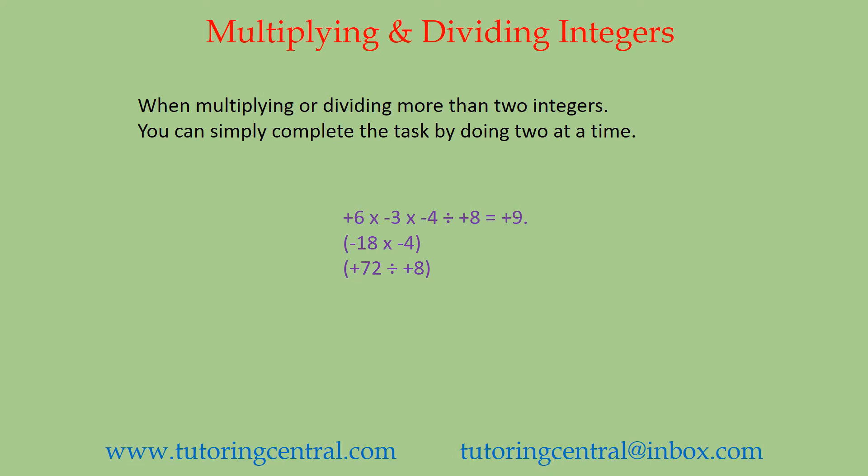When multiplying or dividing more than two integers, you can simply complete the task by doing two at a time going left to right. For example, positive 6 times negative 3 times negative 4 divided by positive 8 equals positive 9. How did we do that? We just went two by two: positive 6 times negative 3 gives us negative 18. Then negative 18 times negative 4 equals positive 72 — because the two signs are the same. Then positive 72 divided by positive 8 gives us positive 9, because those two signs are both positive.